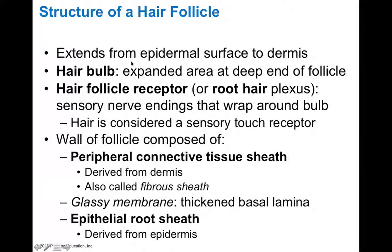Hair follicles extend from the epidermal surface to the dermis. We have the bulb, which is an expanded area deep in the follicle. The hair follicle receptors, also called the root hair plexus, have sensory nerve endings that wrap around the bulb — this is considered a sensory touch receptor, because if your hair bends, it activates the hair follicle receptor. The wall of the follicle is made of a peripheral connective tissue sheath derived from dermis, also called a fiber sheath, and a glassy membrane which is basically a basal lamina.